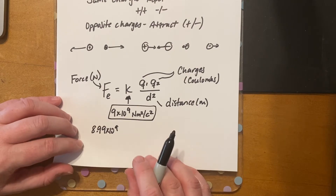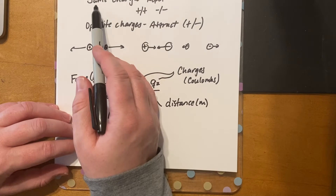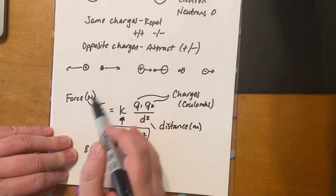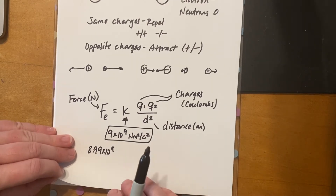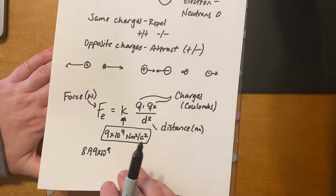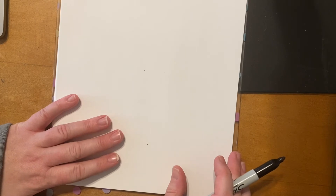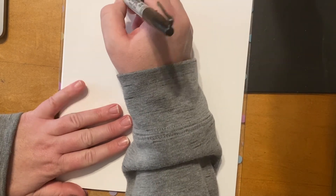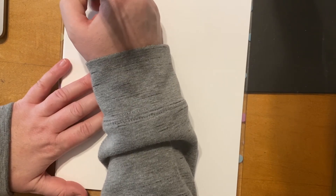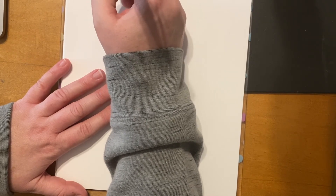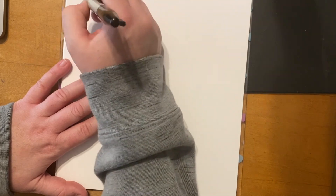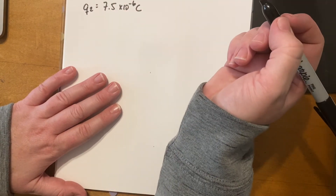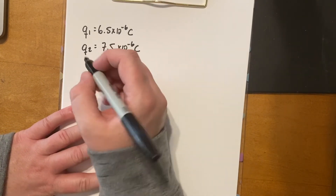The main idea: same charges repel — positive-positive or negative-negative — and opposite charges attract. This equation calculates the strength of that attraction or repulsion. We'll do a sample problem using scientific notation. There's a video on Schoology to help with your calculator. Let's say charge one equals 6.5 × 10⁻⁶ coulombs and charge two equals 7.5 × 10⁻⁶ coulombs. Charge values are typically very small numbers like these.